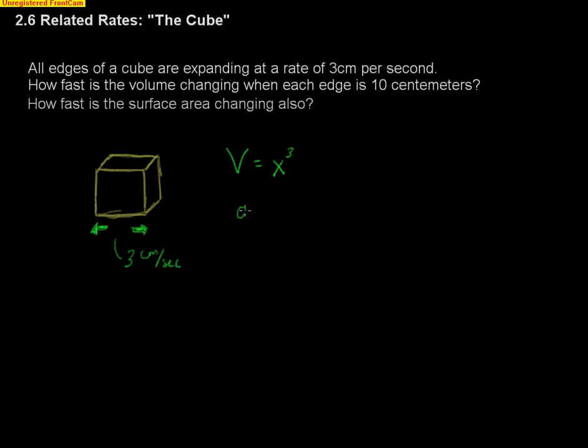So everything is with respect to time. So the derivative of the volume is going to be dV/dt, and x cubed is going to be 3x squared dx/dt. And since we want to know how fast the volume is changing, that means we're solving for dV/dt right here.